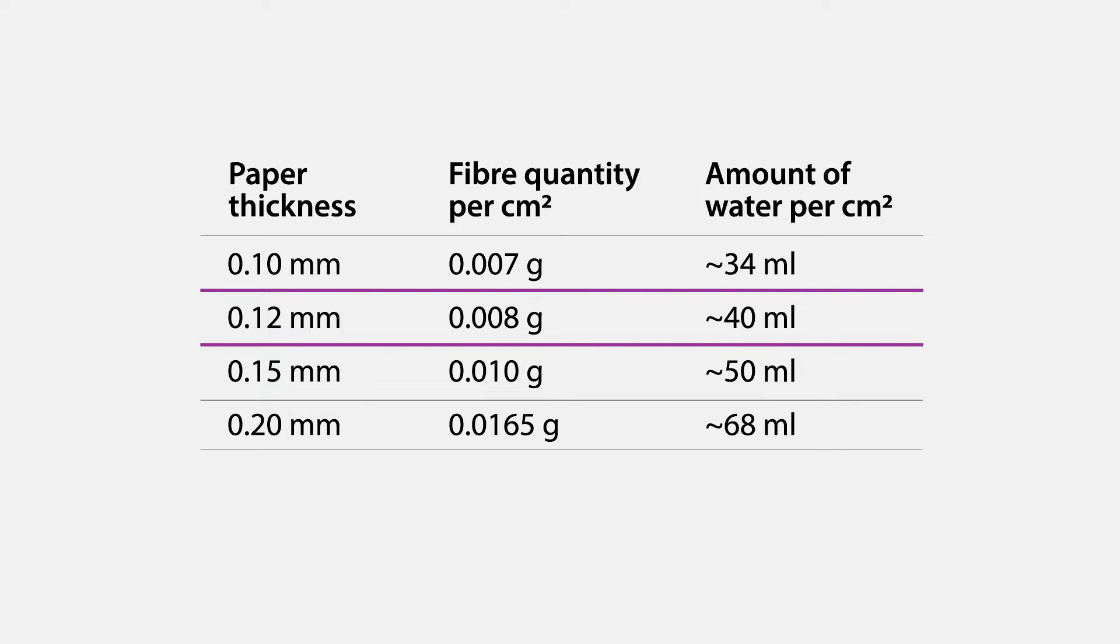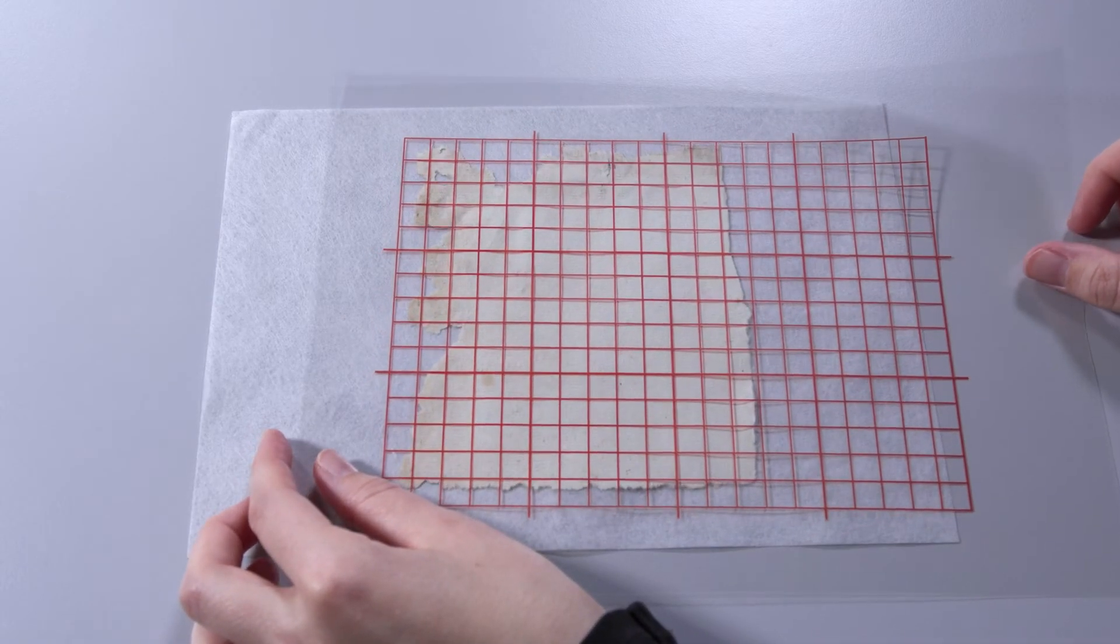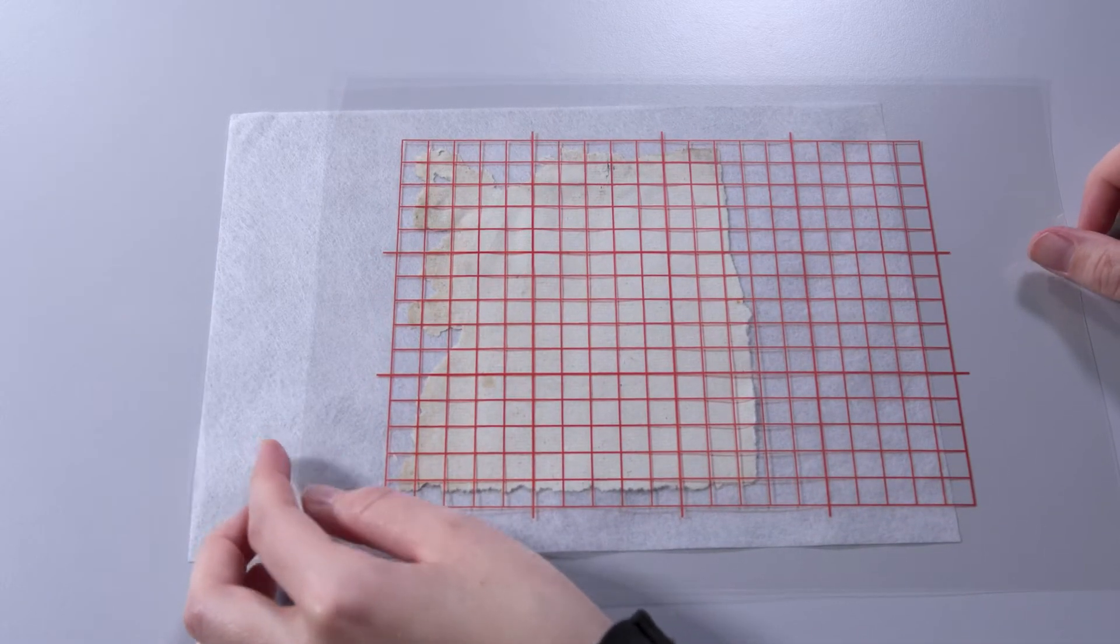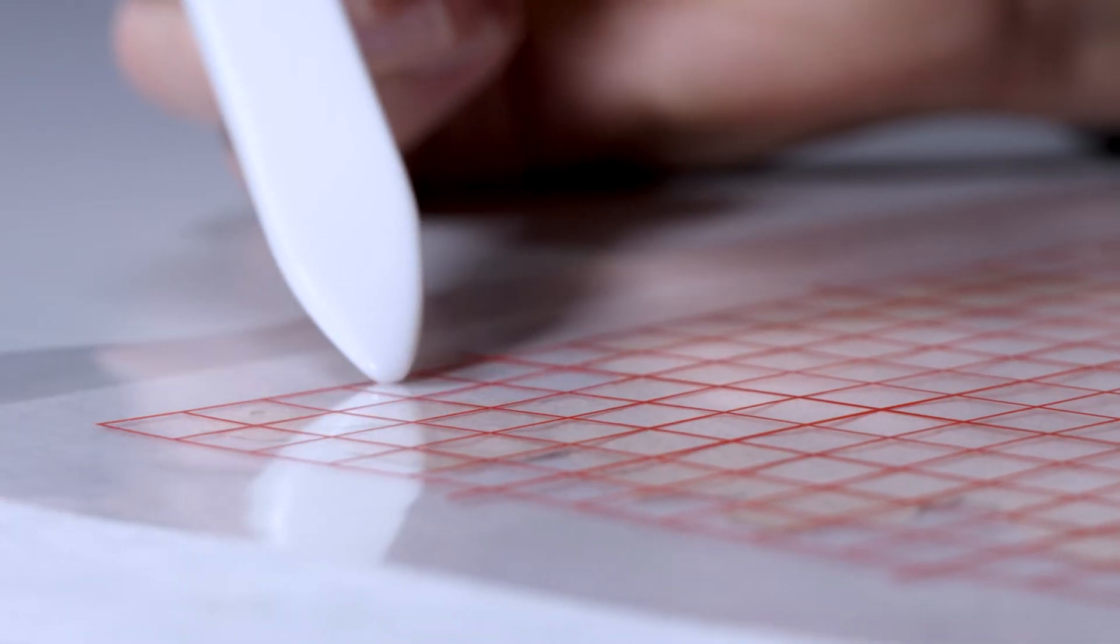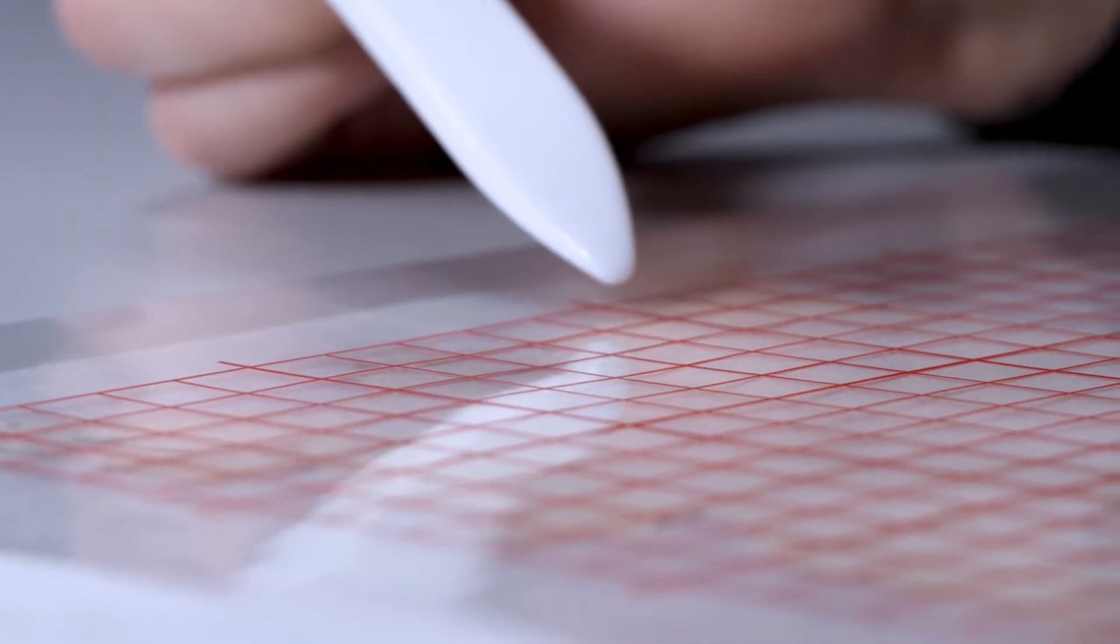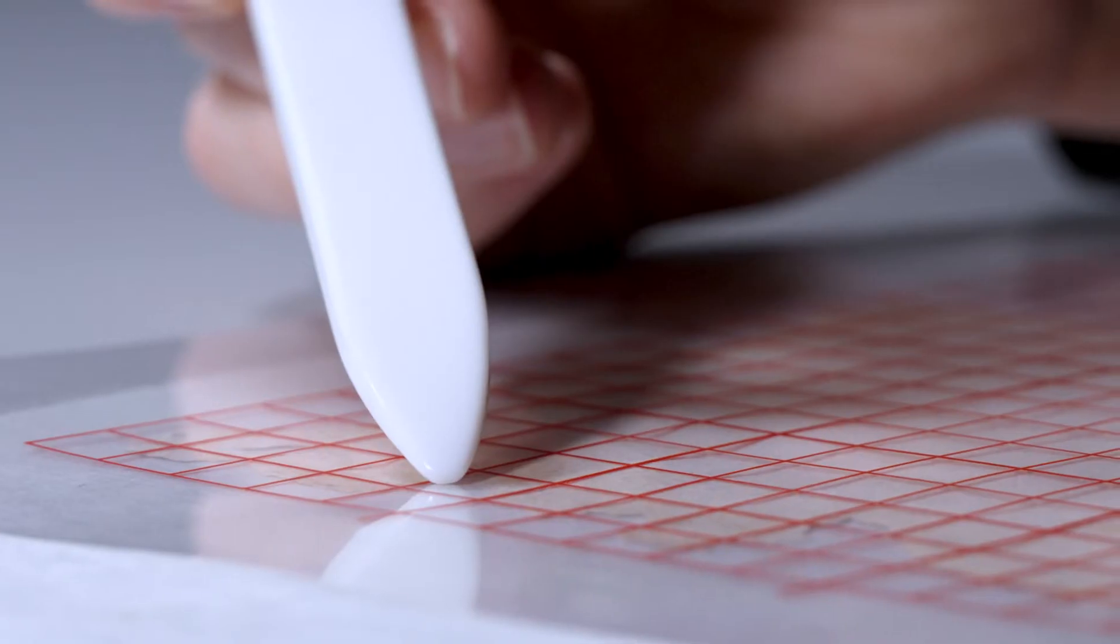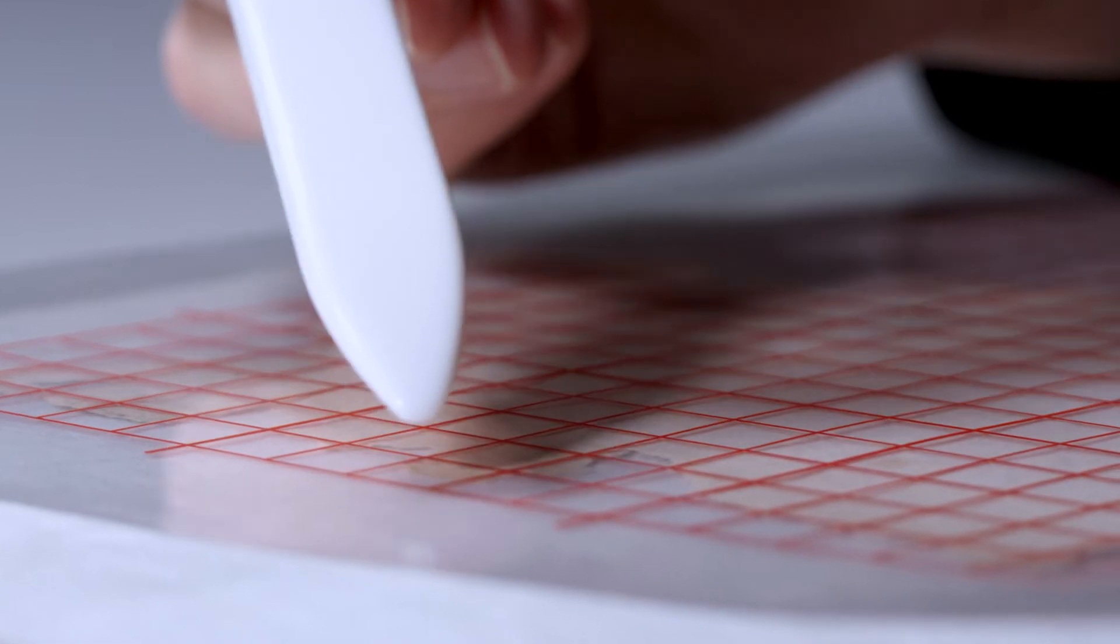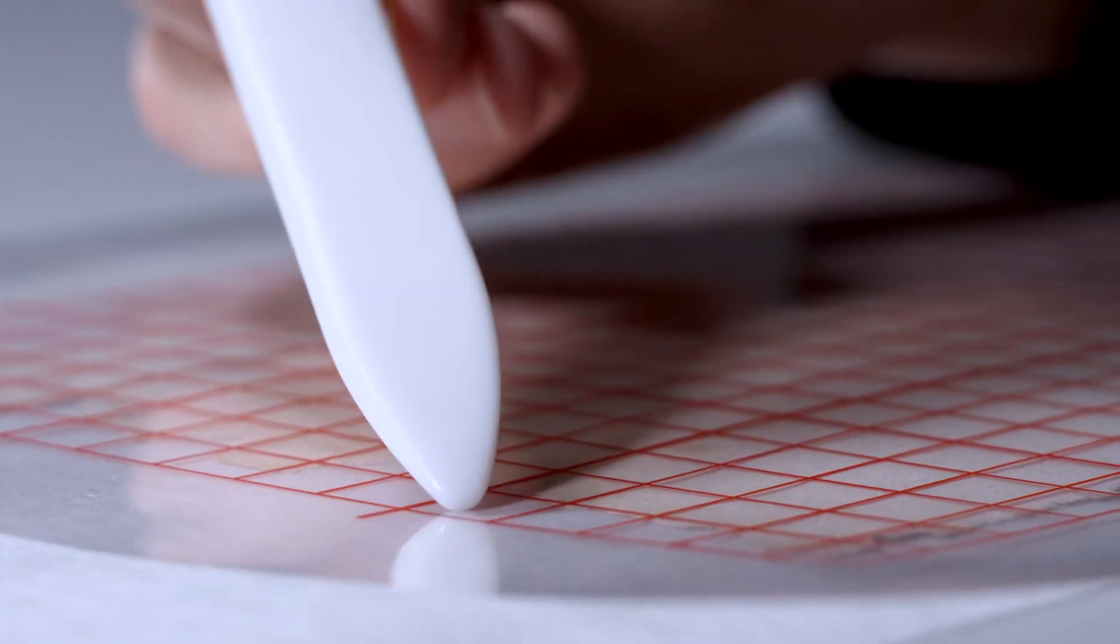The water quantity is approximately 40 ml per square centimeter. A grid with boxes measuring 1 x 1 cm is placed on the losses to calculate their surface area. Then, all of the boxes contained within the area of the loss are counted, even if there are still patches of paper within the boxes. In this example, there are 29 boxes, meaning a surface area of 29 cm².